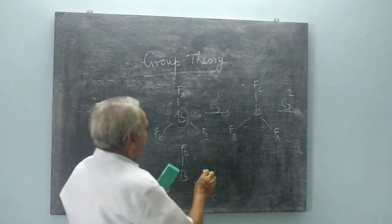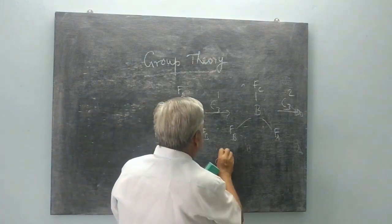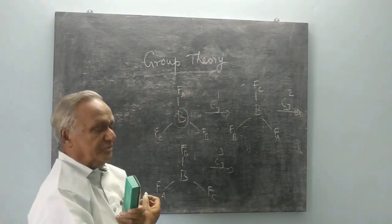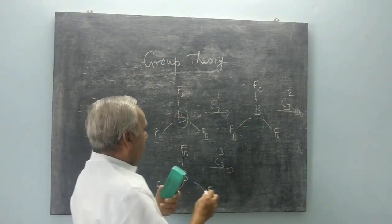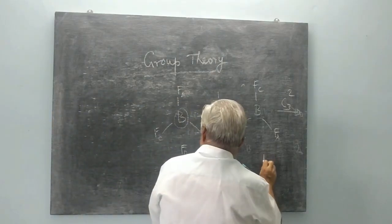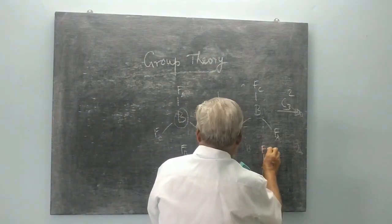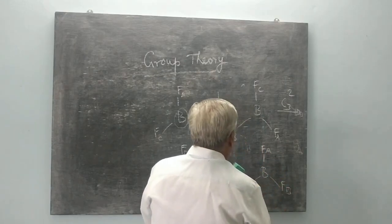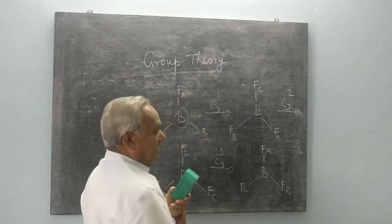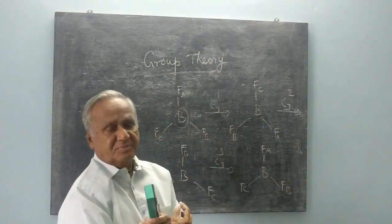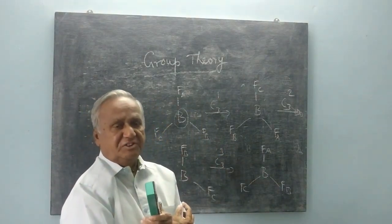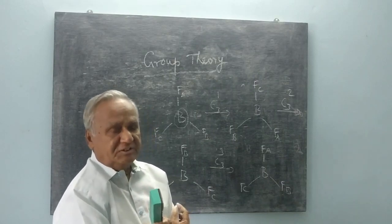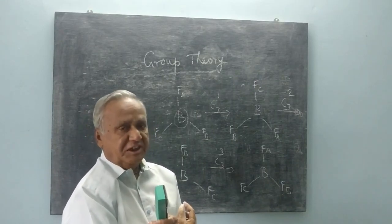If I give a 120-degree rotation for a third time, I call it C3-3. Now C will come here, B will come here, and A will come here. This structure is an identical structure. So your C3 axis produces three operations: C3-1, C3-2, and C3-3.